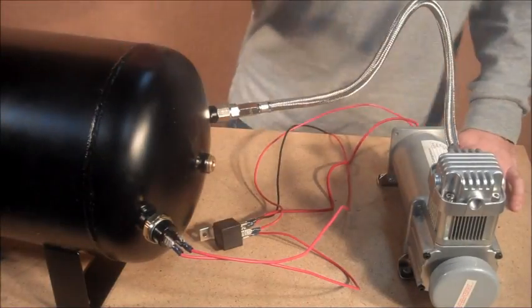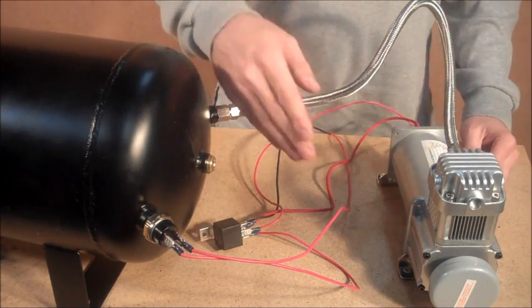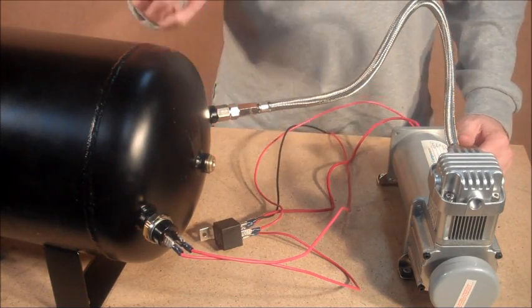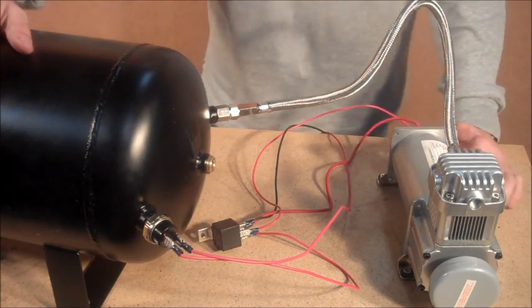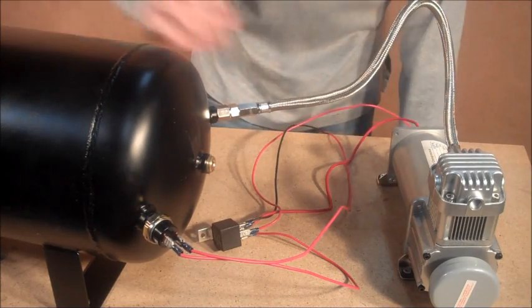Using the enclosed relay, pressure switch, and compressor, I've used some 12 gauge wire here. Wired this up according to the schematic included with the kit. Now we're going to turn on our compressor to fill our tank for the needed air supply.